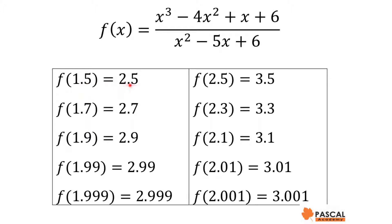f(1.5) = 2.5, f(1.7) = 2.7, f(1.9) = 2.9, and f(1.99) = 2.99. That means when x is getting closer to 2 and it is smaller than 2, f(x) is getting closer and closer to 3.